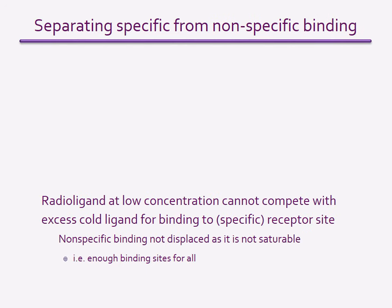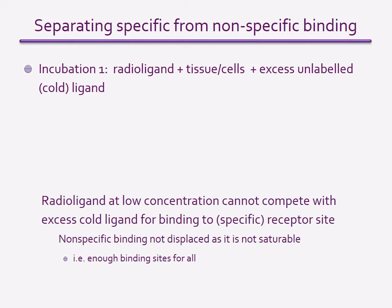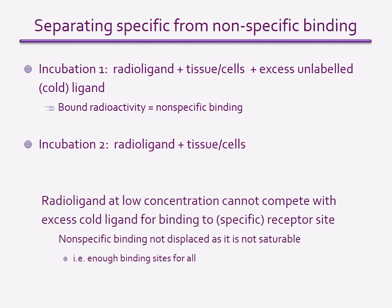This slide illustrates how, in practical terms, the specific and non-specific binding components of an assay are separated. Two incubations are performed. One is in the presence of excess cold ligand to displace radio ligand that is bound to specific sites, so the radioactivity detected comes only from the ligand bound to non-specific sites. The other incubation has no excess cold ligand, so contains radio ligand bound to both specific and non-specific sites — the total binding. The radioactivity from non-specific sites is then subtracted from the total radioactivity to give the amount of radio-labeled ligand bound to the target sites.